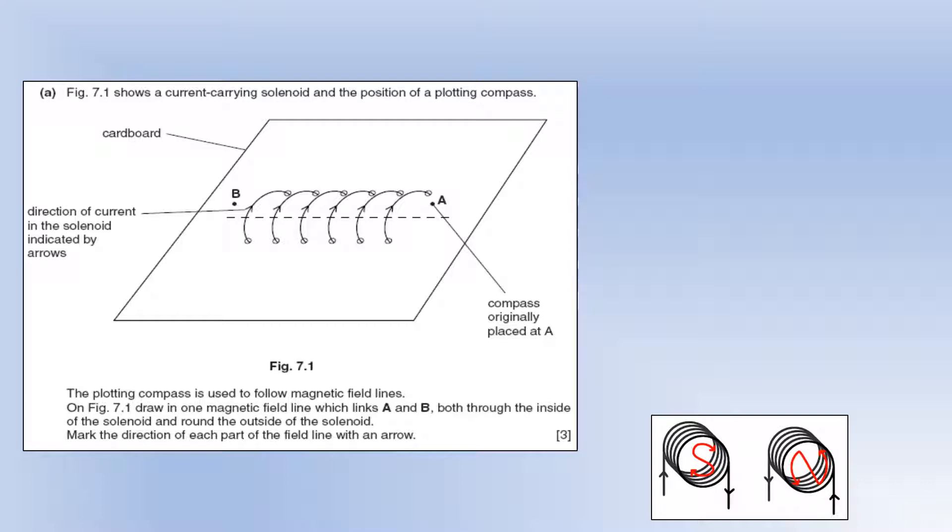The plotting compass is used to follow magnetic field lines. On the diagram, draw in one magnetic field line which links A and B, both through the inside of the solenoid and round the outside of the solenoid. And then we want to mark the direction of each part of the field line with an arrow.